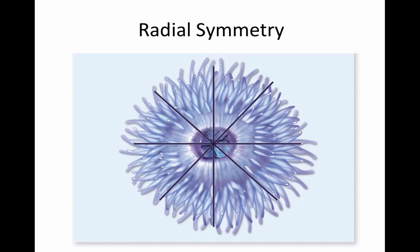When we move to the next group of animals — cnidarians like anemones, jellyfish, and corals — they have radial symmetry. This means you can divide the animal in any plane that passes through the center and you will have two mirror images. You can see these lines dividing it in an infinite number of ways, each producing identical mirror-image halves. Animals with radial symmetry like cnidarians are usually sessile, meaning they don't move. Or if they do move, like jellyfish, they don't move very fast and don't have a clear direction of movement. It is advantageous to have radial symmetry because prey or predators can come from any angle.